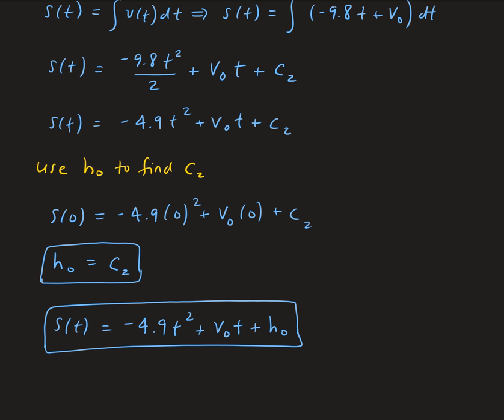So if we're given the initial velocity and the initial height, and we're assuming we're working in a vacuum on earth, we can plug those values in to get the position function for that object.